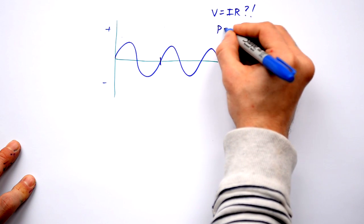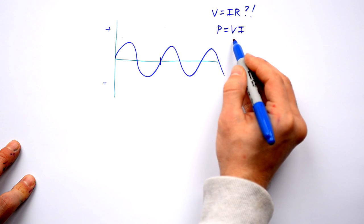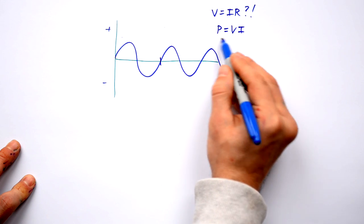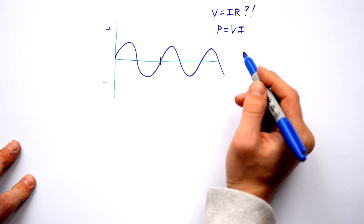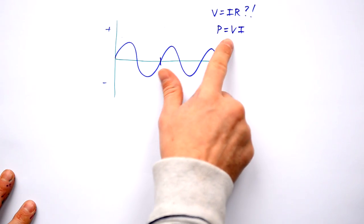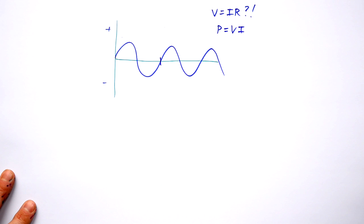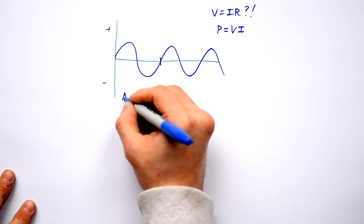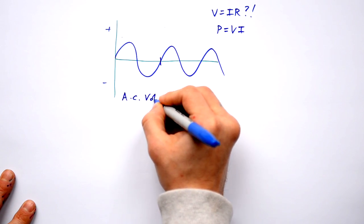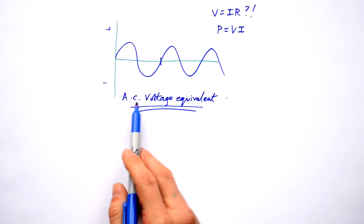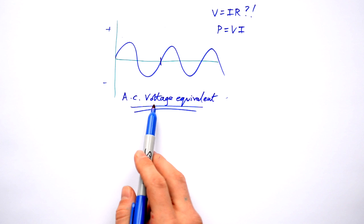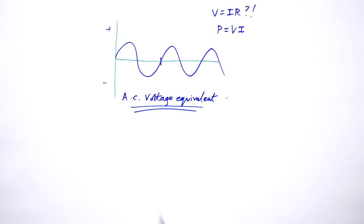If we then use P equals VI, we have zero voltage on average, so we have zero power. But that's not true because we know AC supplies power to everything around the country. So we need something to replace our normal voltage. We need an AC voltage equivalent.